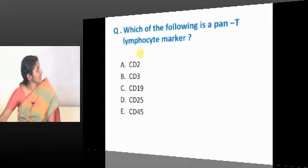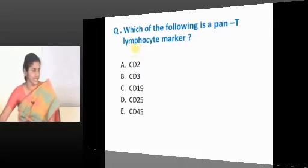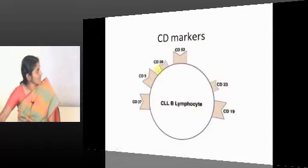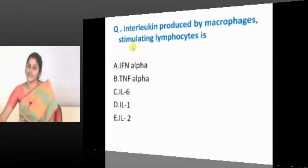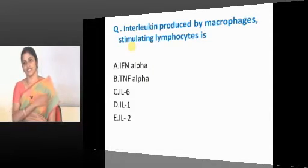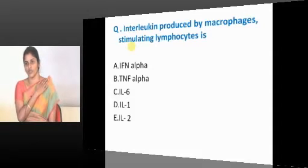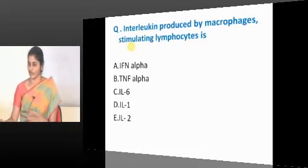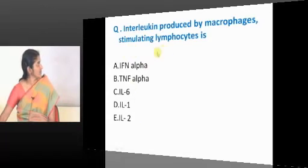The pan-T lymphocyte marker is CD3. CLL B lymphocytes express CD3 markers on the surface — that is how we identify them. The method of identifying CD3 markers is immunophenotyping, such as immunohistochemistry. The commonly used method now is flow cytometry, which uses the same principle of immunophenotyping.